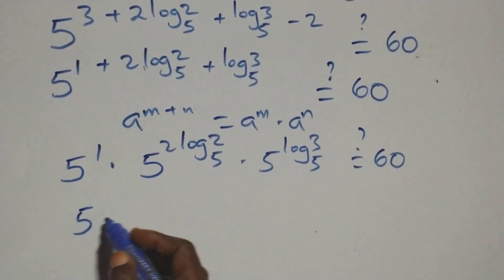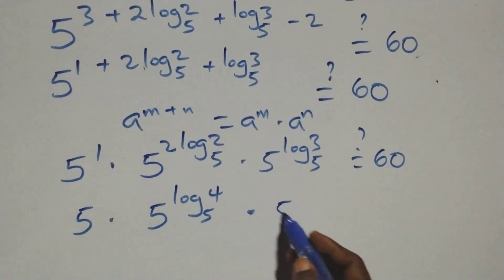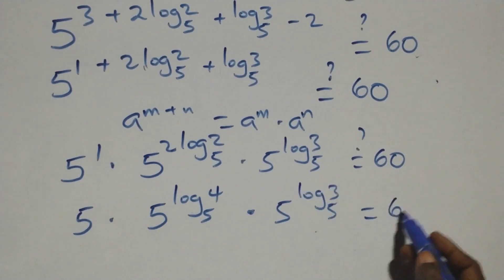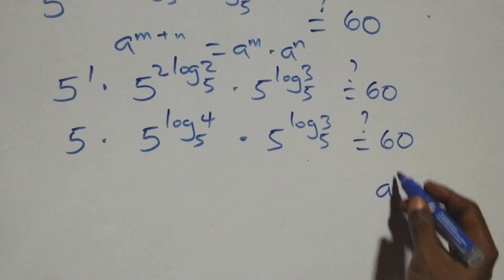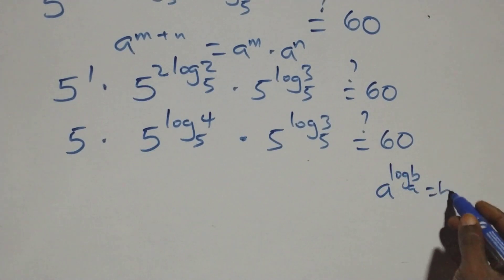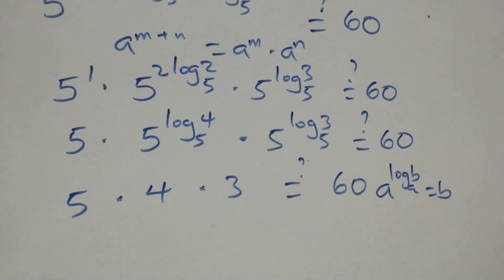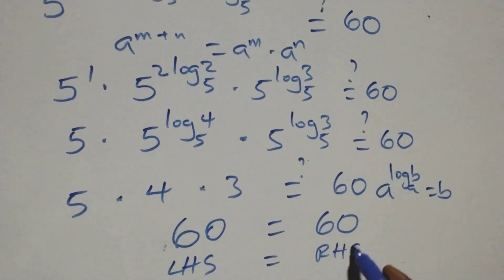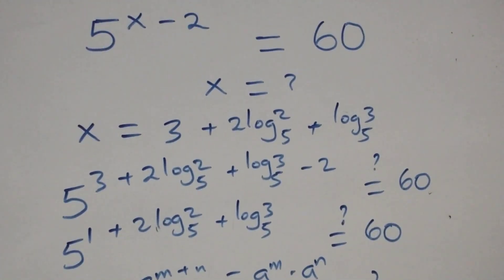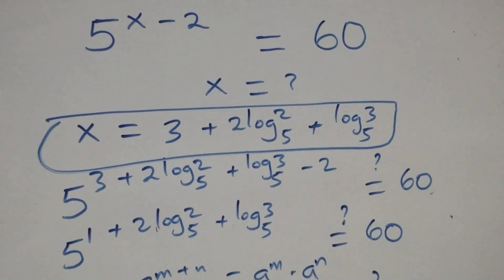Here, 5 raised to power 1 is 5. Bringing the 2 out from the exponent, we get 5^(log₅2²) times 5^(log₅3). Applying the law a^(log_a b) = b, this gives 5 times 4 times 3, which equals 60. And 5 times 4 is 20, and 20 times 3 is 60, which equals 60 on the right-hand side. Therefore the left-hand side equals the right-hand side, and we conclude that x equals 3 plus 2 log₅2 plus log₅3 satisfies this given problem.